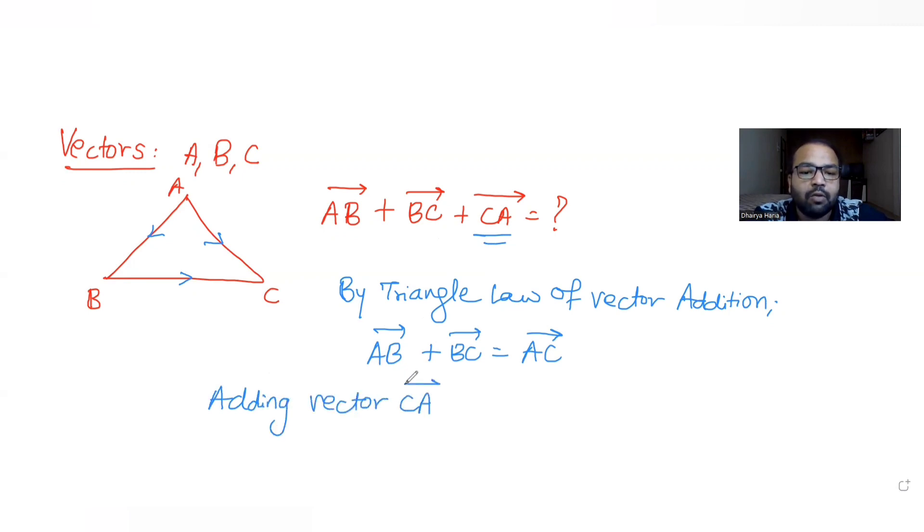Adding vector CA on both sides, because we need to find the value for the vector addition of these three terms which are given to us. Now my vector addition becomes AB vector plus BC vector plus CA vector equals AC vector plus CA vector.